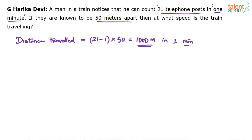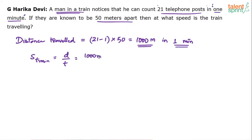You know the distance and you know the time, so we can find out the speed. Speed of the train equals speed of the man because the man is inside the train. Speed equals distance divided by time taken — 1000 meters divided by 60 seconds, which gives 50 by 3 meters per second.